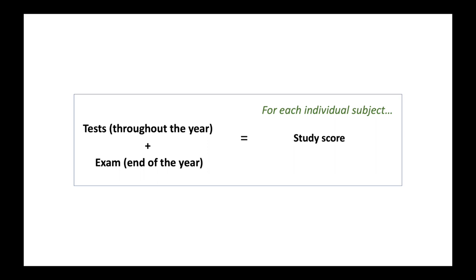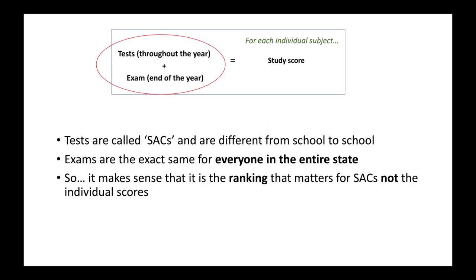Let's have a look at this first diagram again. For each individual subject, students will receive a study score, and that study score is contributed to by tests and an exam. The tests are called SACs and are different from school to school in terms of when they are, their difficulty, and sometimes their format as well. The exam at the end of the year, on the other hand, is the same for everyone in the entire state and is sat at the exact same time.